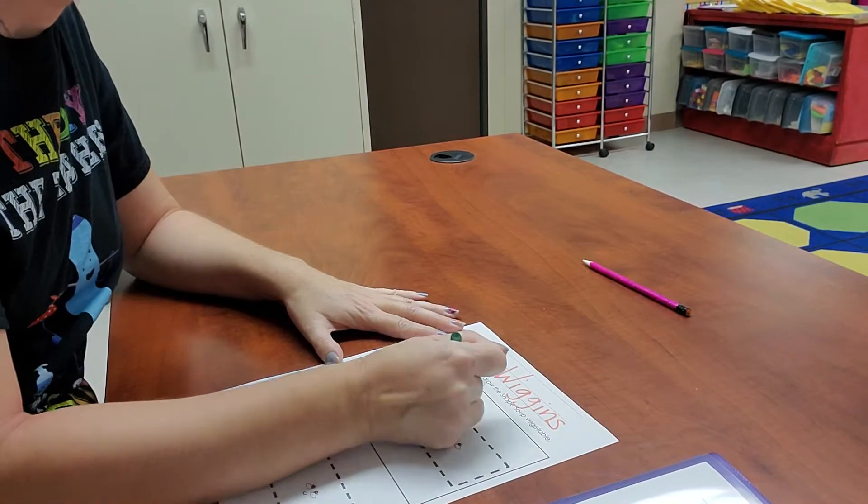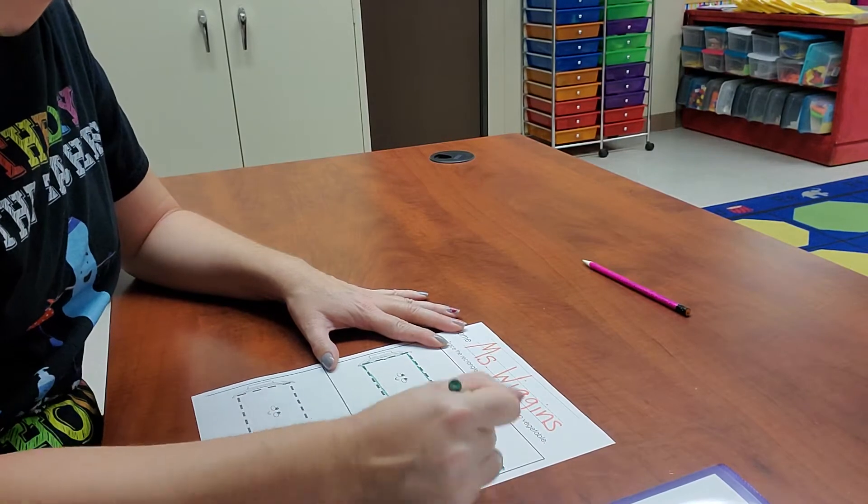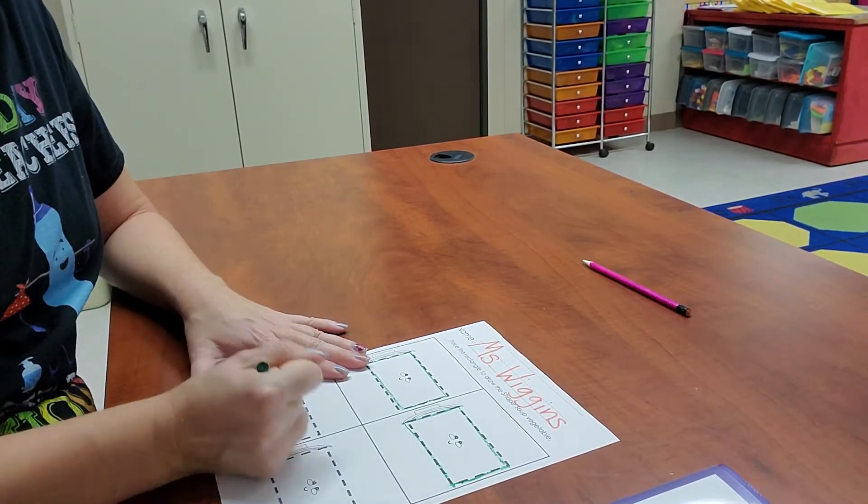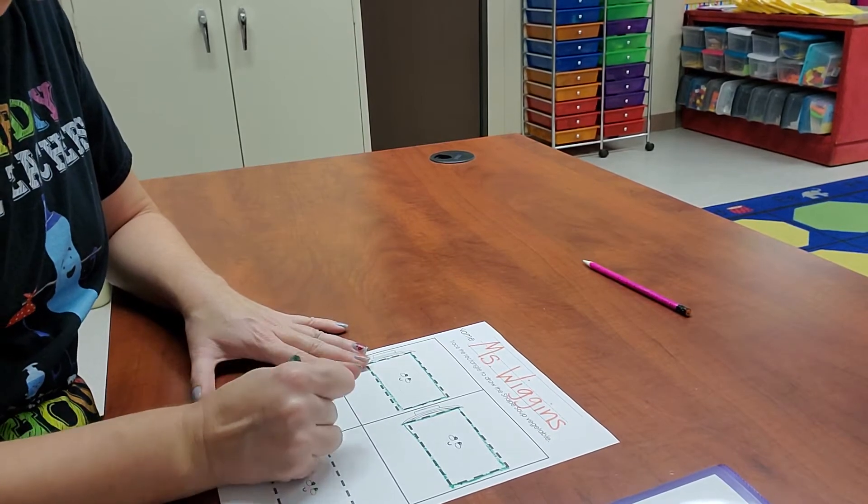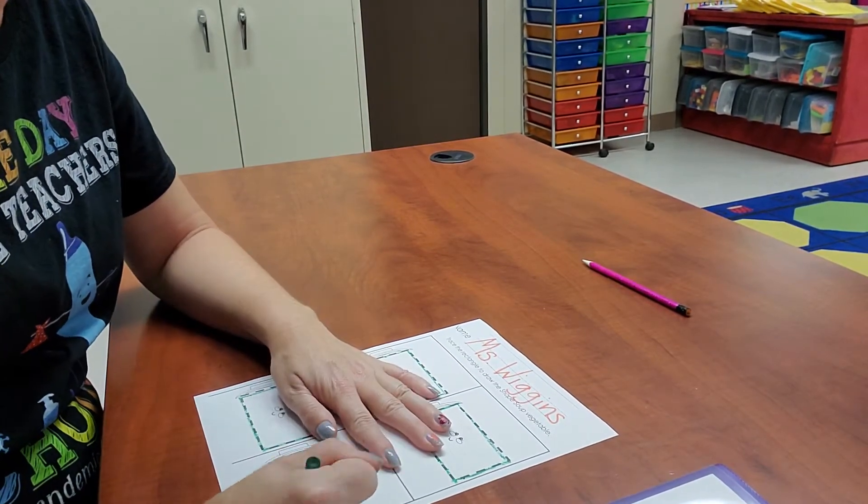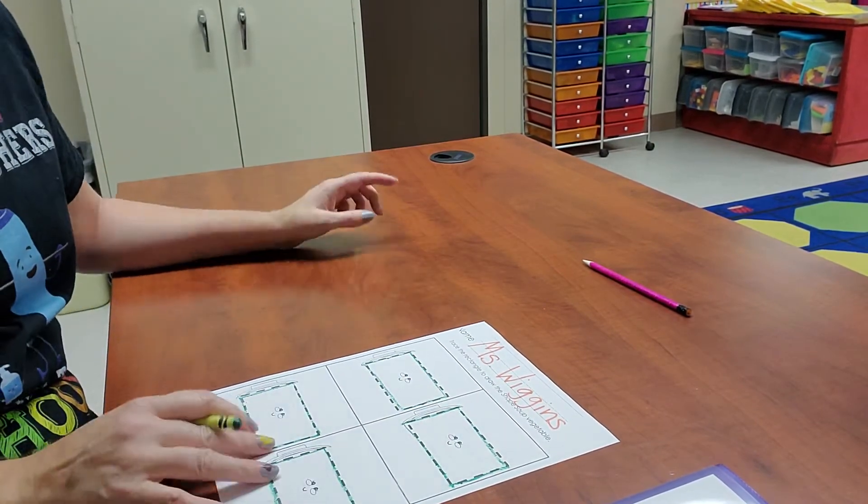Short, short, long, long. Short, short, short, long, long. Short, short, long, long. And there you have it! We've learned how to make rectangles all by ourselves.